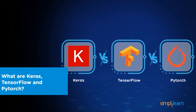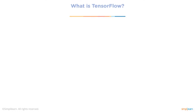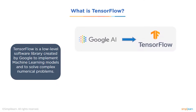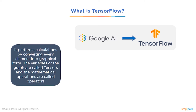Before we look at the differences between these platforms, we first need to know what each of them is. TensorFlow is a low-level software library created by Google to help implement machine learning models and solve complex numerical problems. It is a free and open source software library for machine learning, with a particular focus on training and inference of deep neural networks. TensorFlow is a symbolic math library based on dataflow and differential programming, used for both research and production at Google.